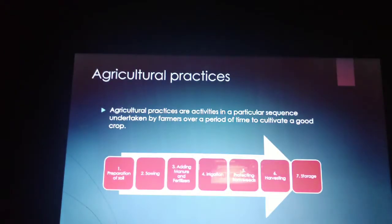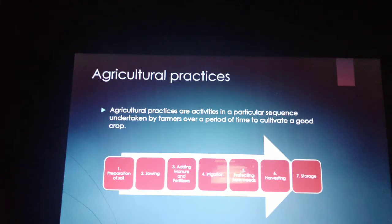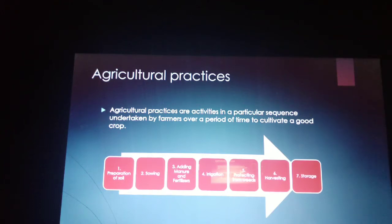Agricultural practices are activities in a particular sequence undertaken by farmers over a period of time to cultivate a good crop. The steps involved are: Step 1 — preparation of soil; Step 2 — sowing; Step 3 — adding manure and fertilizers; Step 4 — irrigation; Step 5 — protecting from weeds; Step 6 — harvesting; Step 7 — storage.